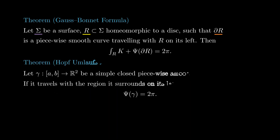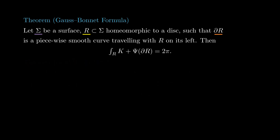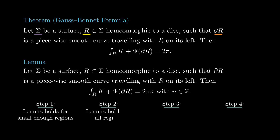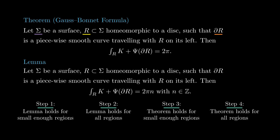This is a generalization of the theorem of turning tangents, the Hopf Umlaufsatz, proved in lesson 7. In the two-dimensional plane, for a simple closed curve traveling with the region it surrounds on its left, its total signed curvature equals 2pi. To prove the Gauss-Bonnet formula, we will first prove a weaker version — a lemma saying the left-hand side is a multiple of 2pi. Our plan: first show the lemma holds for small enough regions using semi-geodesic charts and the Jacobi equation; then show it holds for general regions; then show the theorem holds for small enough regions by deforming a curved region into a flat one and applying the Umlaufsatz; and finally prove the formula in full generality via patching arguments.